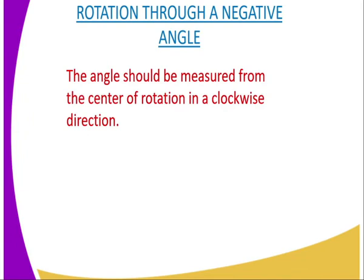Rotation through a negative angle: the angle should be measured from the center of rotation in clockwise direction, and that is very important to note, because in most cases most learners normally make a mistake here — instead of measuring the angle in clockwise direction, you find them measuring in anticlockwise direction. Whenever you have a positive angle, you are supposed to measure in anticlockwise direction, but if you have a negative angle, you should use the clockwise direction when measuring the angle of rotation.